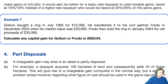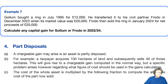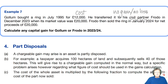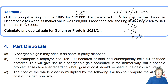It might be wise to transfer some assets so that one spouse isn't suffering tax at 20% and 28%, while having no AEA to use. Let's look at example number seven. Gollum bought a ring in 1995 for 12,000. He transferred it to his civil partner — a no gain, no loss transaction — in December 2023 when the market value was 20,000. Frodo then sold it for 20,000. If the rule weren't in place and the transfer was at market value, Frodo's proceeds of 20,000 against a cost of 20,000 would give no gain and no tax.